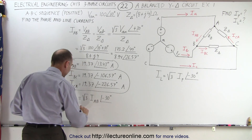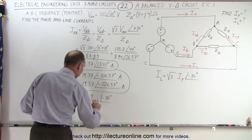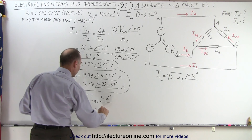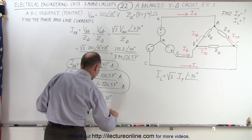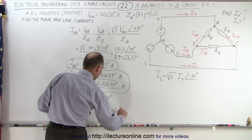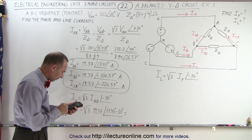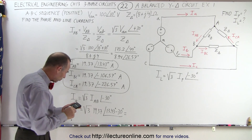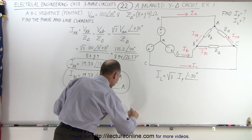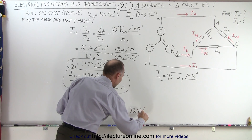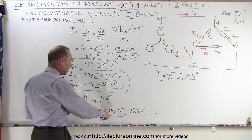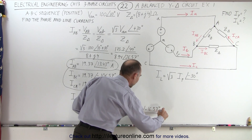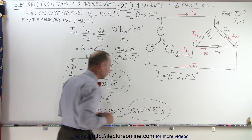Plugging that in: IA equals the square root of 3 times 19.37 at a phase angle of 13.43 degrees minus 30 degrees. So we have 19.37 times the square root of 3, which is 33.55, with a phase angle of minus 16.57 degrees. That is our first line current IA: 33.55 amps at minus 16.57 degrees.